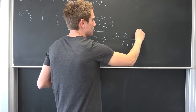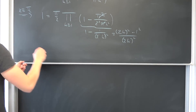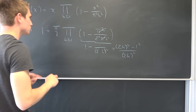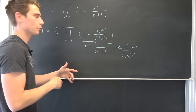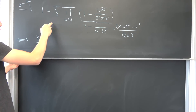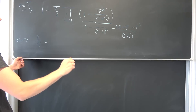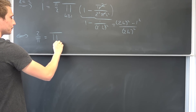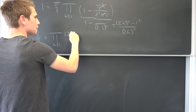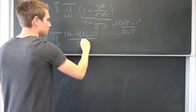Now 1 is nothing but 1 squared, meaning the numerator is nothing but the difference of two squares — that is why I wrote it that way. We can multiply both sides by 2 over pi, which is nonzero, giving us 1 equals the infinite product. The difference of two squares gives us 2k minus 1 times 2k plus 1, all over 2k squared.